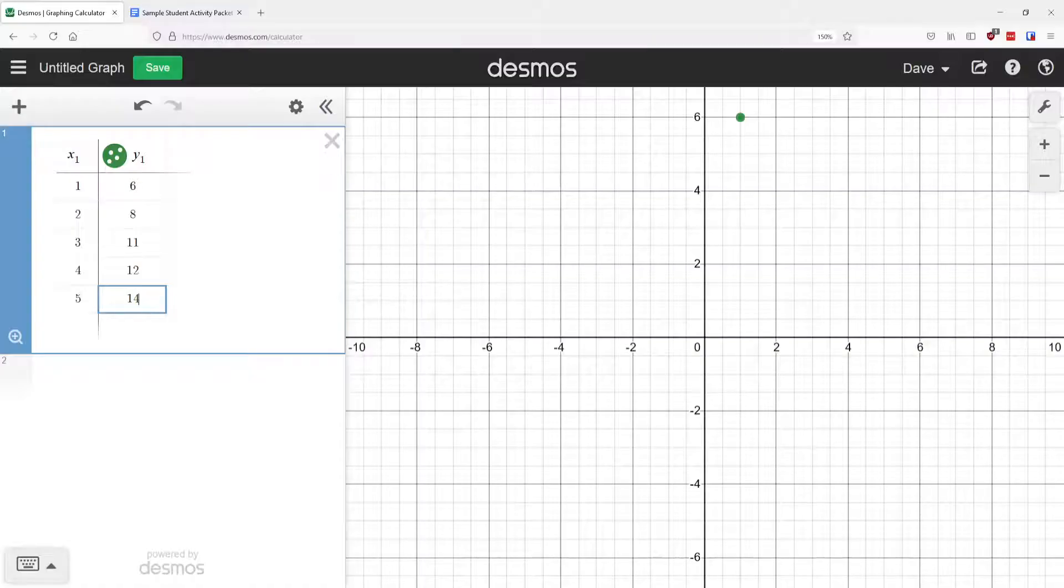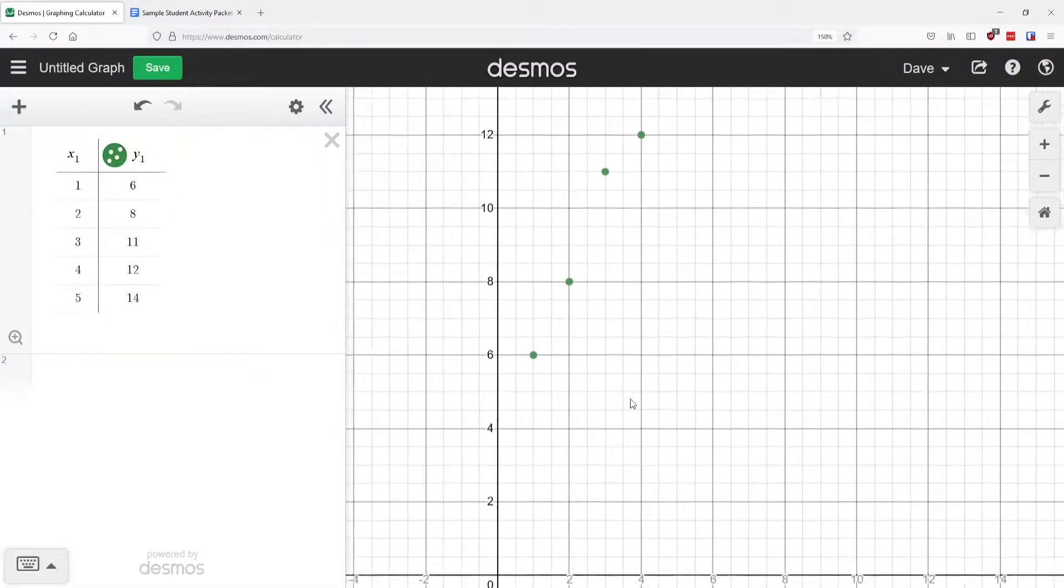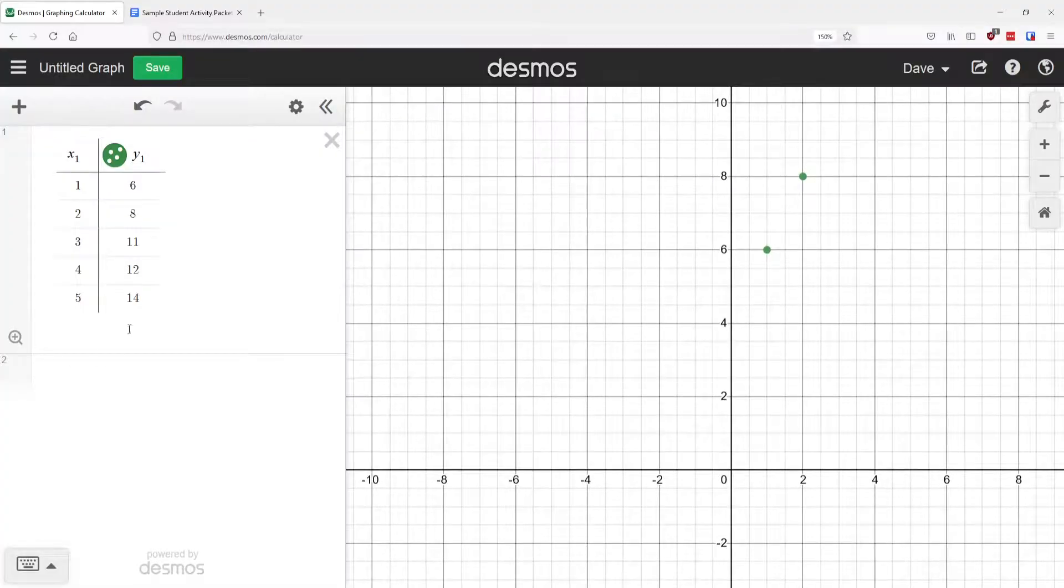So the first thing that you'll notice is step 3 says we can't actually see the data. We can only really see this point 1, 6. The rest of it is kind of like hiding up here somewhere. So what we can do to quickly find the data is in our box, this little zoom fit button, the magnifying glass.